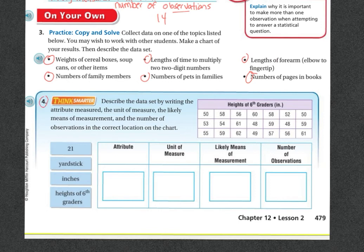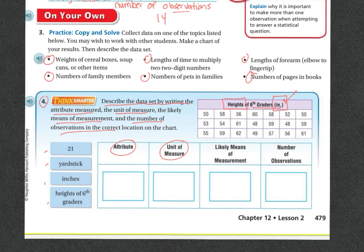Number four, I'd like you to do on your own. It says describe the data set by writing the attribute measured, the unit of measures, and the likely means of measuring, the number of observation recorded. So my attribute right there, it says height of sixth graders. Pretty easy. Which one of these is it? Right? The next one says unit of measure, right there. Look what they put unit of measure. Pretty easy. Likely means of measurement. Well, what do you think they might have measured with? There's a hint. These right here go in those blocks. And then finally, number of observations. You can just count them. One, two, three, four, five, six, and so on.